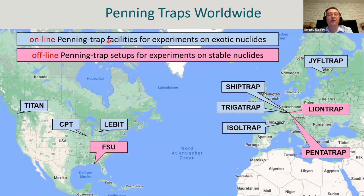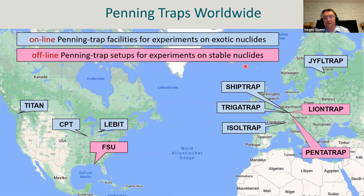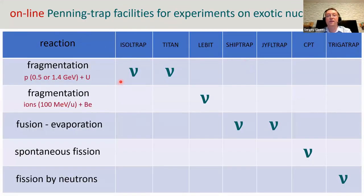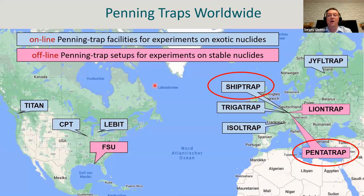To my knowledge, there are 10 functioning high-precision Penning trap facilities scattered across North America and Europe. Seven comprise the group of online Penning trap facilities, located at large radioactive ion beam facilities, and they are complementary to each other — probing different regions of the nuclear chart using different nuclear reactions. The other three form the group of offline Penning trap setups for experiments on stable nuclids. I've picked two spectrometers as examples: PentaTrap for the offline group, and ShipTrap as a representative of online facilities.